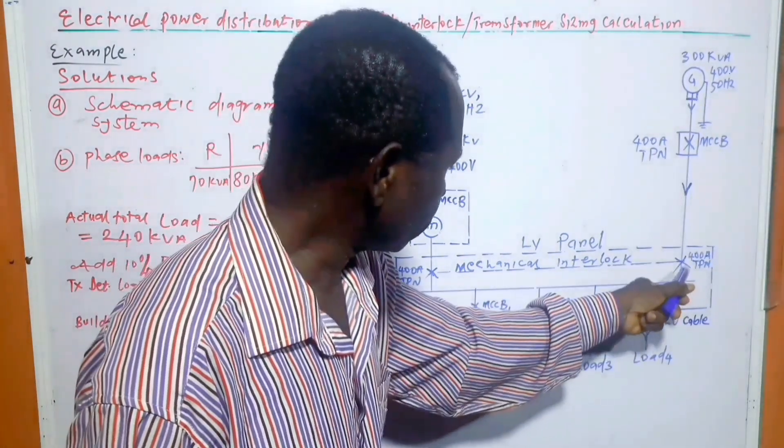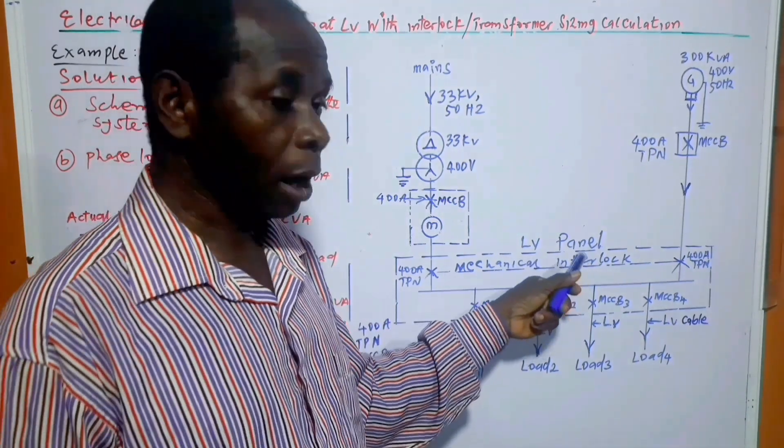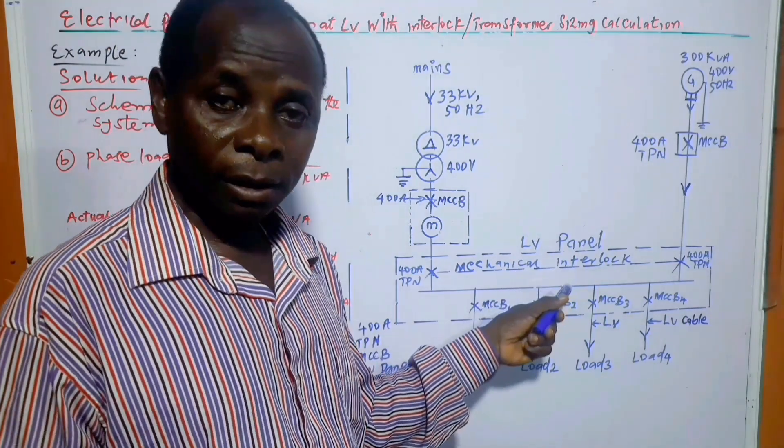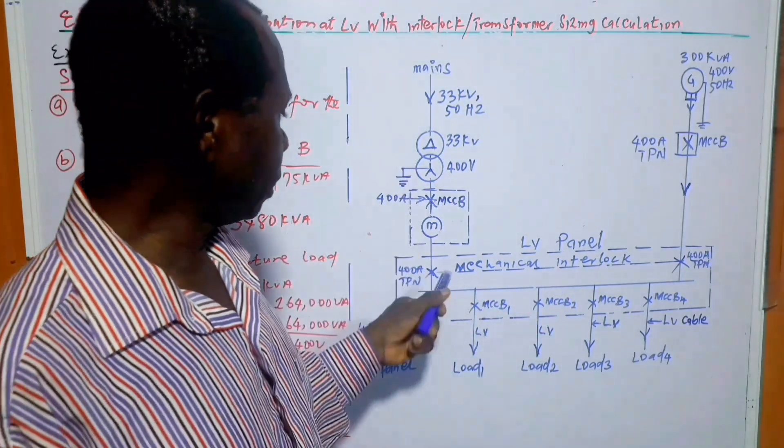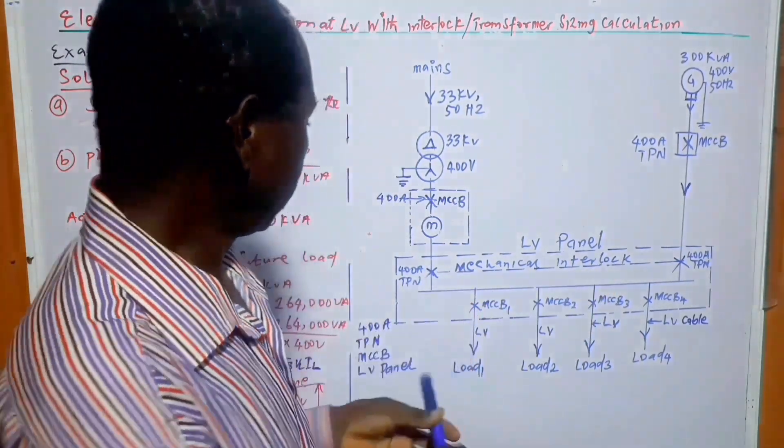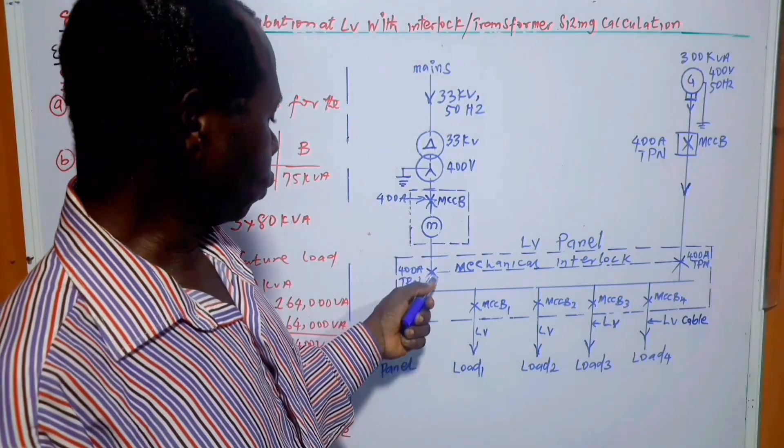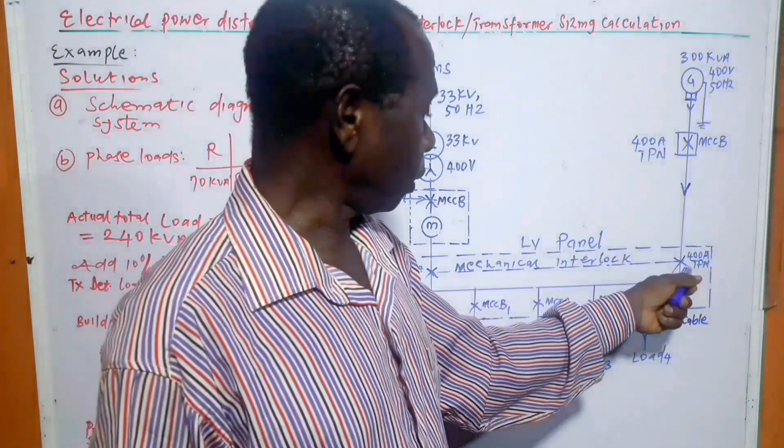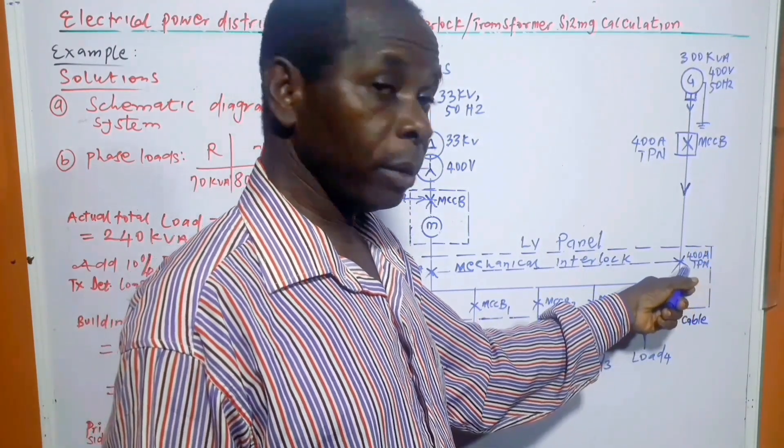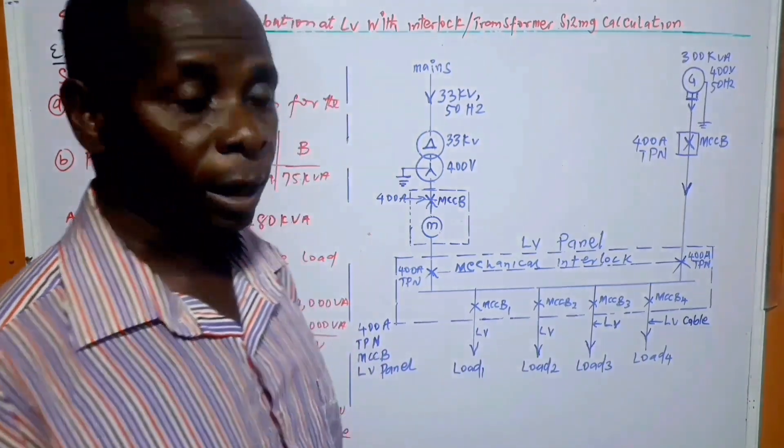So we have here, this is the interlock. This is the mechanical interlock in the sense that it is not automatic in this case. So when there is power failure, this circuit breaker will need to be opened and this one will be closed so that the generator output will come here and it will be available to the common board section and hence to the load.